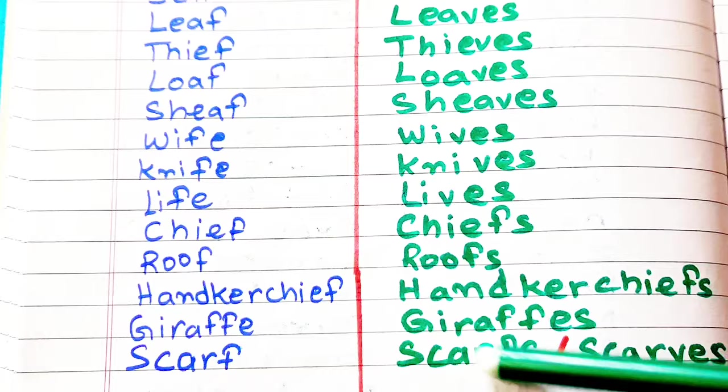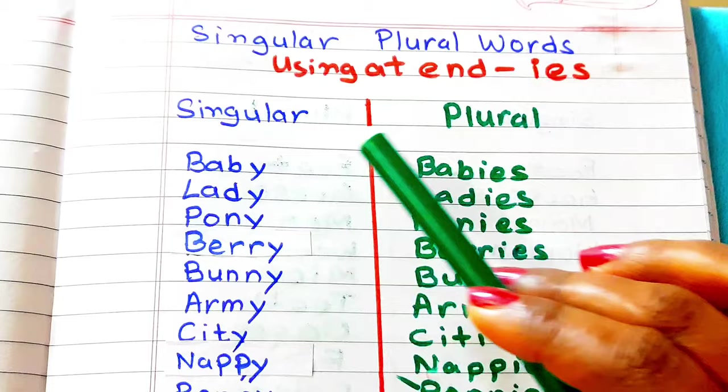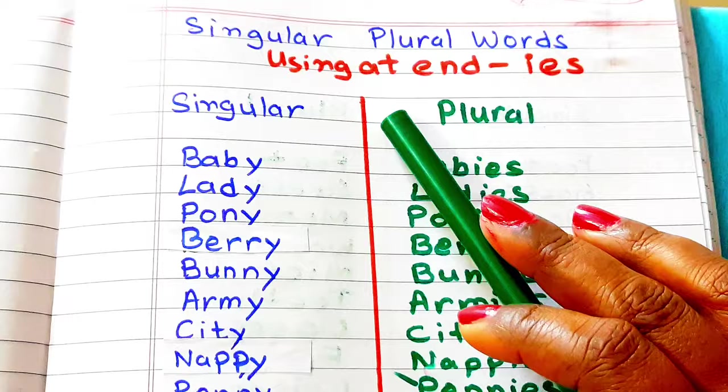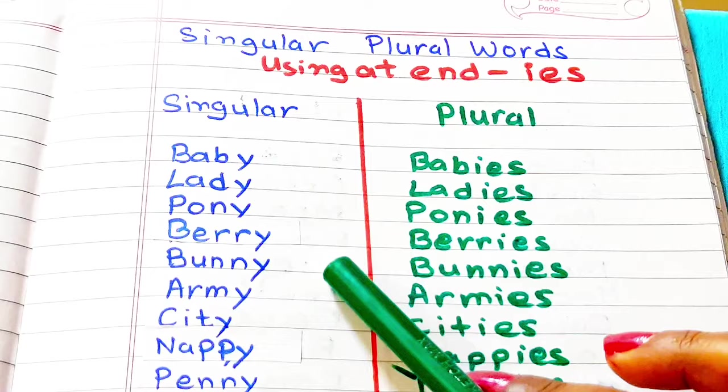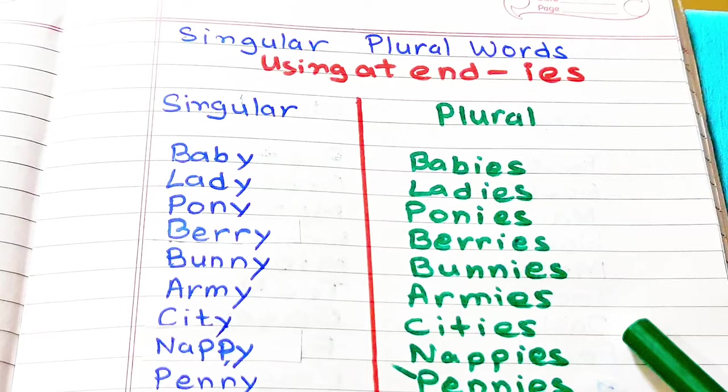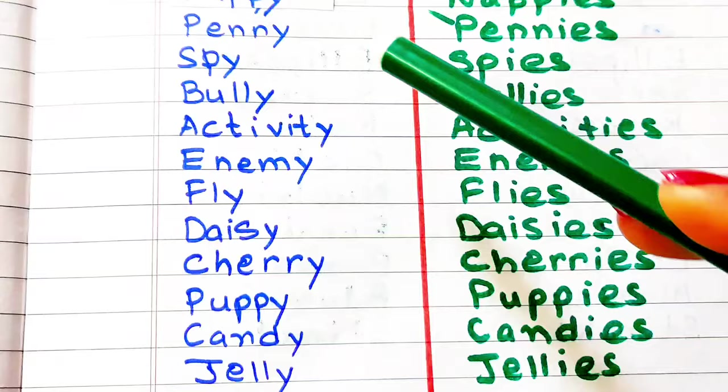Now let's see what are singular words which are changed into plural by adding I-E-S. Before this, I would like to say if you haven't subscribed my channel yet, then please subscribe. Baby, babies. Lady, ladies. Pony, ponies. Berry, berries. Bunny, bunnies. Army, armies. City, cities. Nappy, nappies.